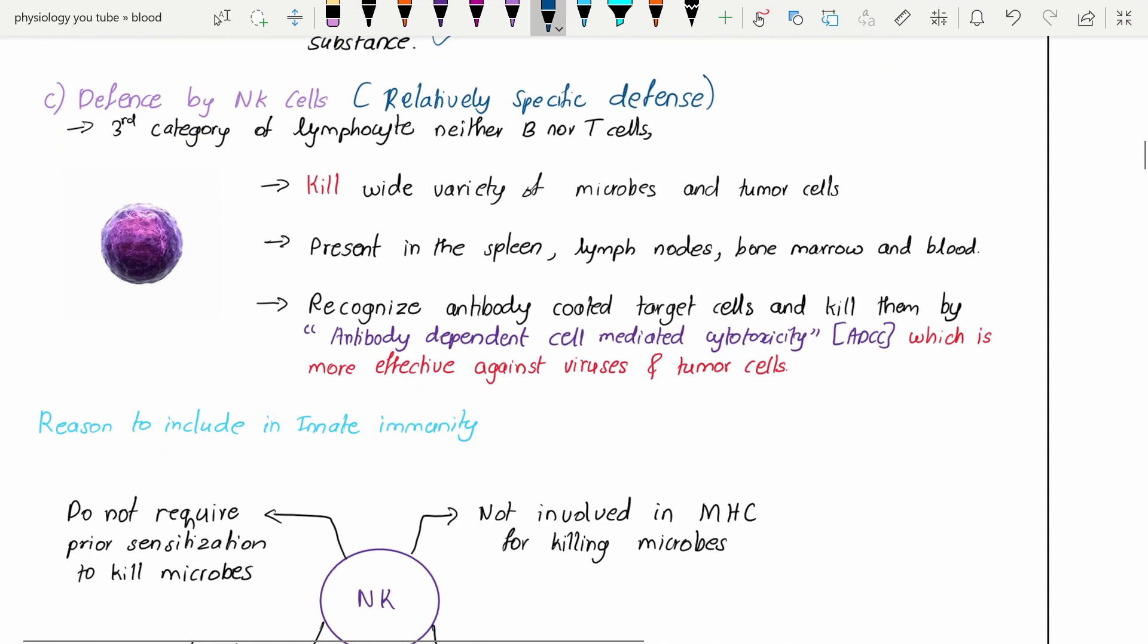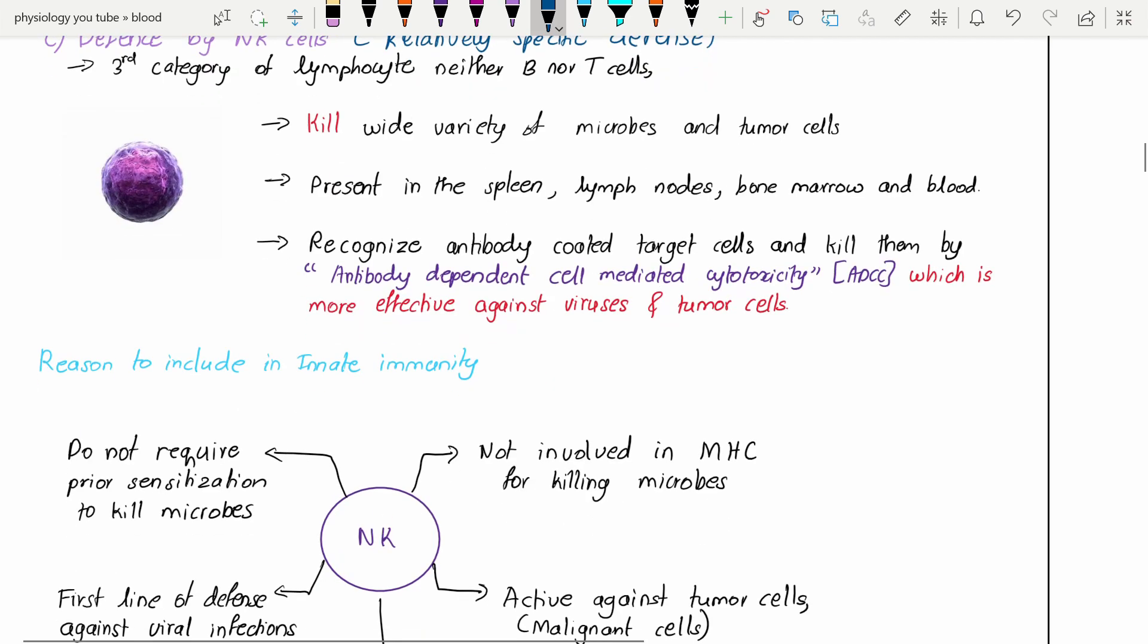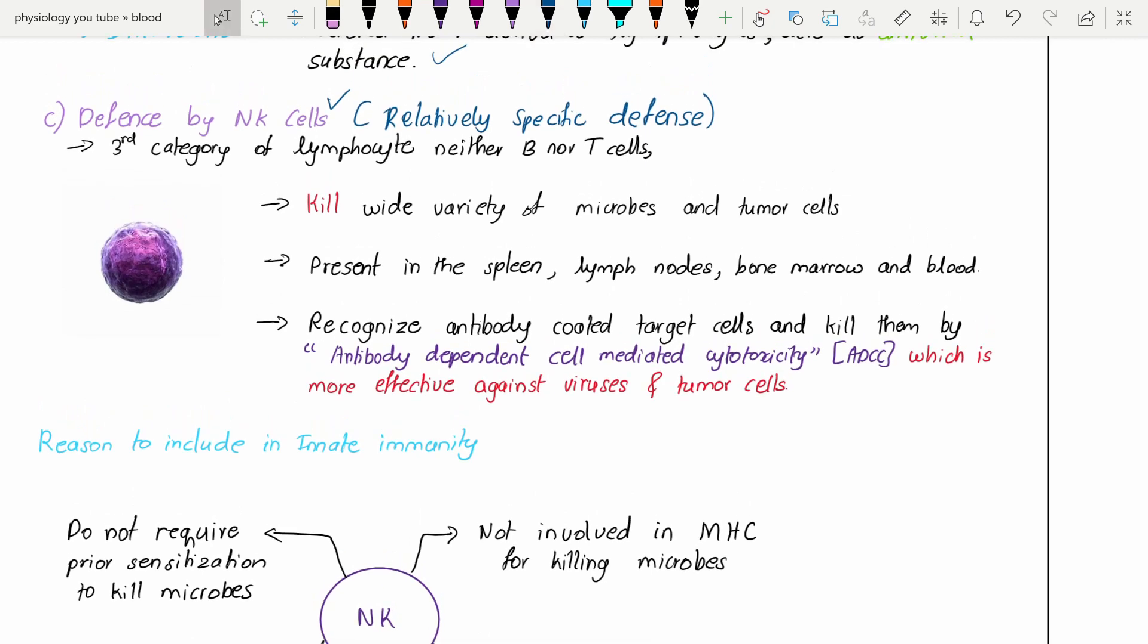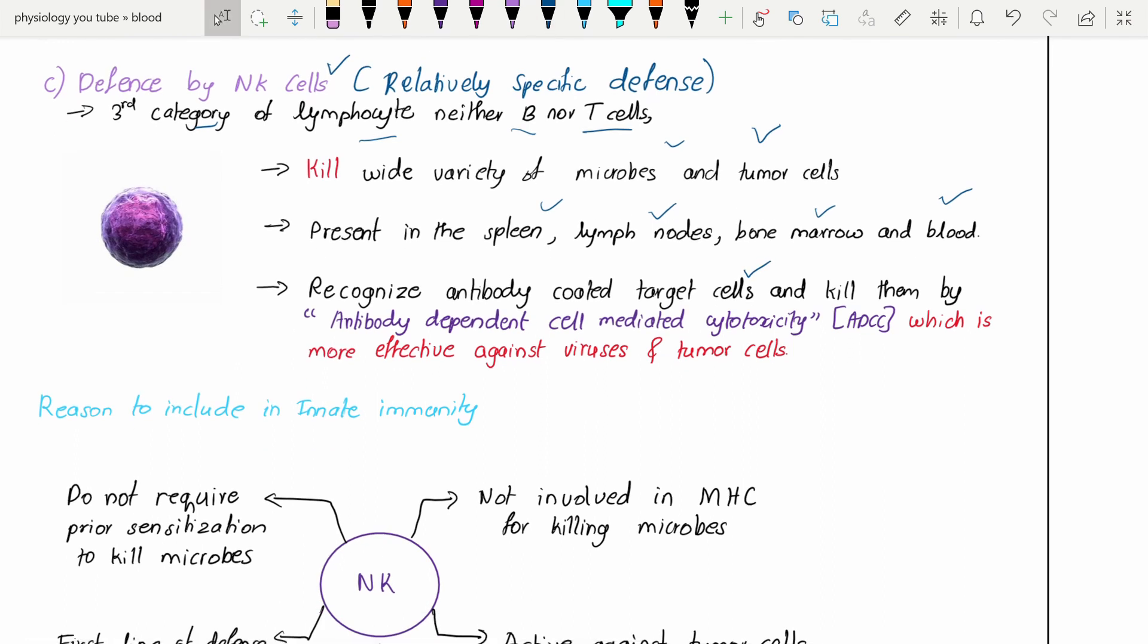Defense by natural killer cells - we can call it relatively specific defense. I'm going to tell you why we call it relatively specific and why we include it under innate immunity. These are the third category of lymphocytes, neither B nor T cells. They can kill a wide variety of microbes and tumors. They are present usually in the spleen, lymph nodes, bone marrow, and blood.